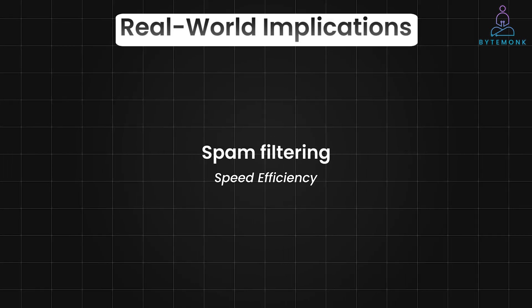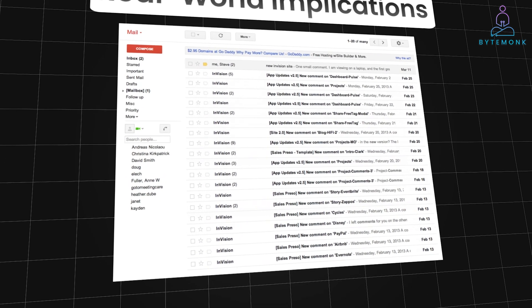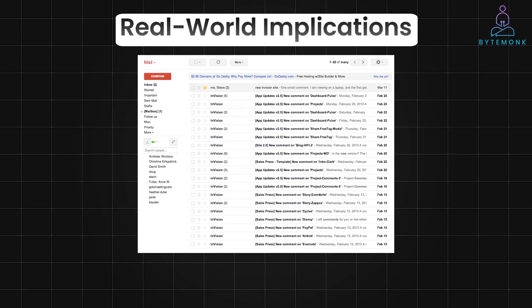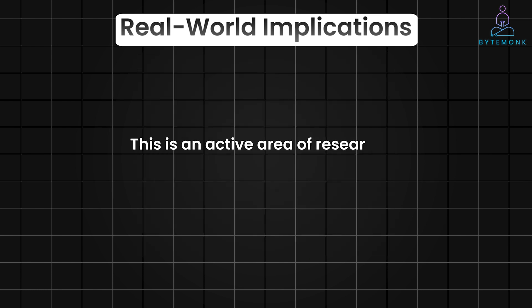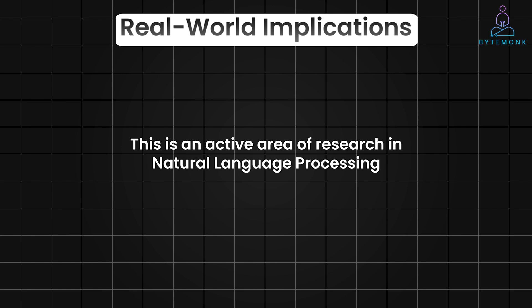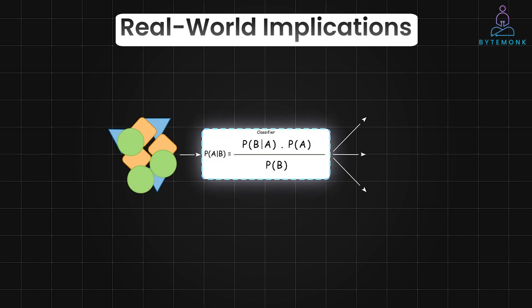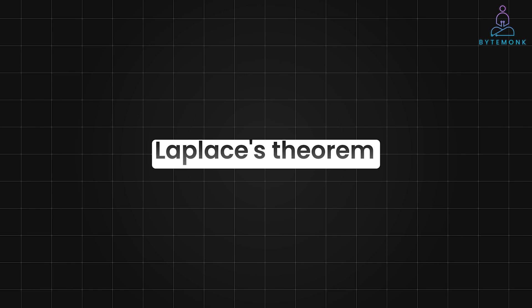In spam filtering, where speed and efficiency are crucial, the naive Bayes assumption enables us to build fast and effective spam filters that can handle vast amounts of email data. However, if computational resources and data availability are not constraints, exploring models that capture word dependencies could lead to even more accurate spam filters — an active area of research in natural language processing. While the naive assumption isn't perfectly accurate, naive Bayes is surprisingly effective for many text classification tasks. And that's how you use Bayes' theorem to calculate the probability of spam given certain words in an email. In our next video, we'll explore Laplace's theorem, a variation of Bayes' theorem useful when we have limited data and need to make assumptions about prior probabilities.